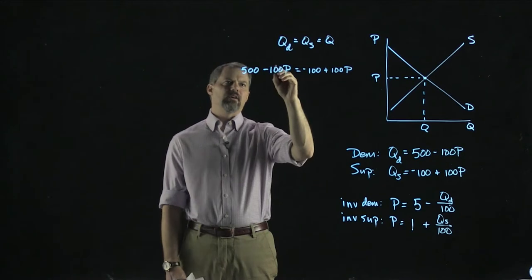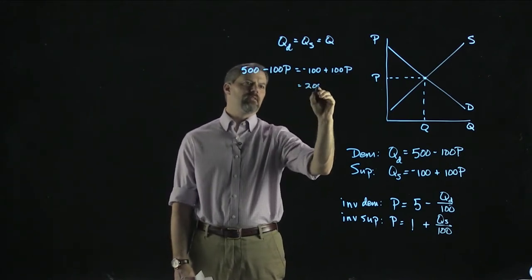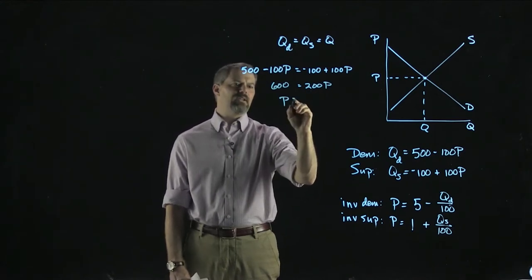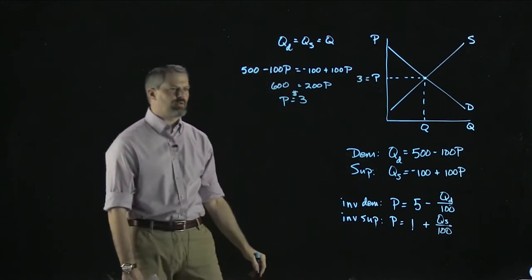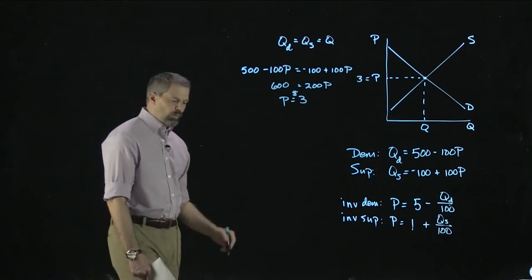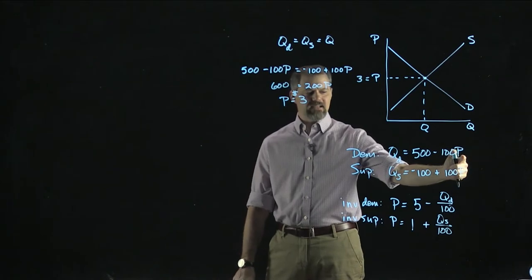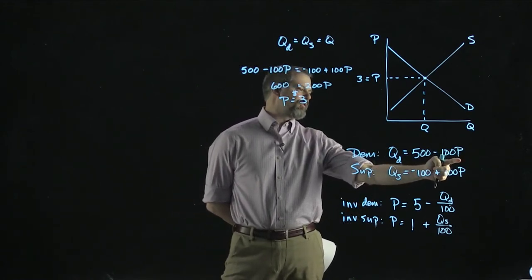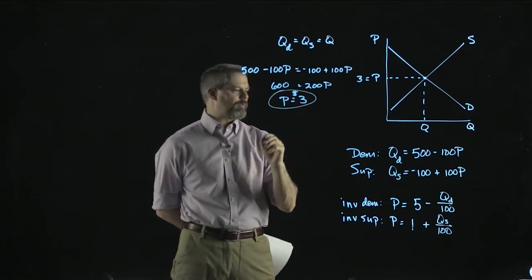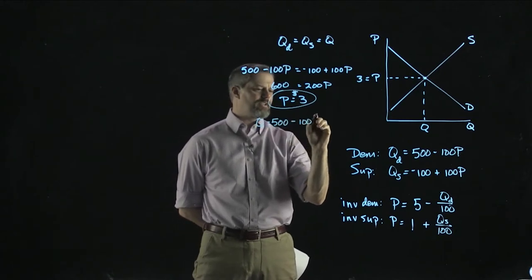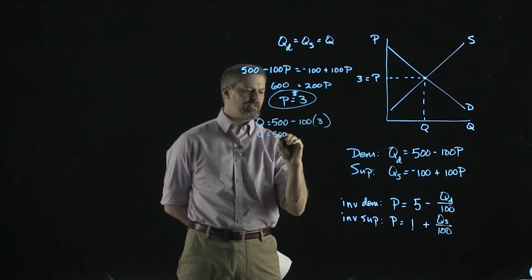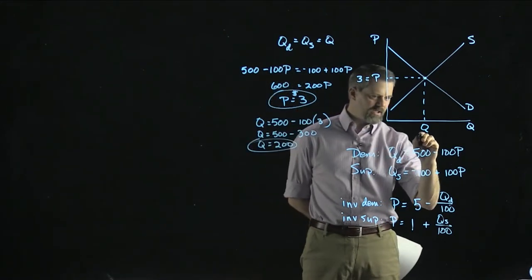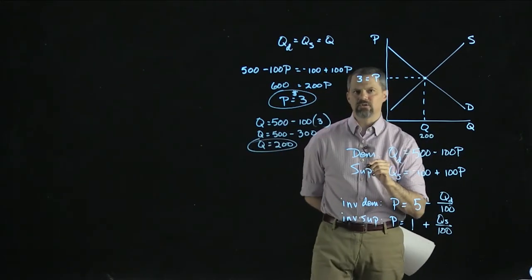We have 500 minus 100P equals negative 100 plus 100P. Now we solve for P: moving all P terms to one side gives 200P, and all other terms to the other side gives 600. Dividing both sides by 200 gives P equals $3. The equilibrium price is $3. Plugging back into the demand curve: Q equals 500 minus 100 times 3, so Q equals 500 minus 300, which equals 200. The equilibrium quantity is 200 units.